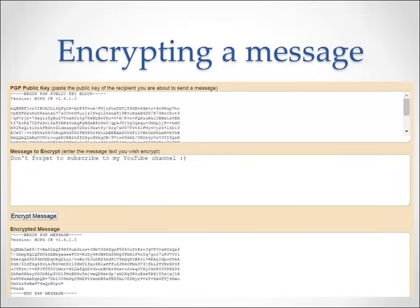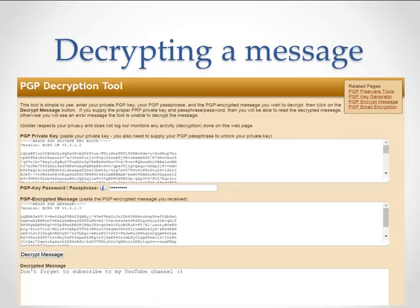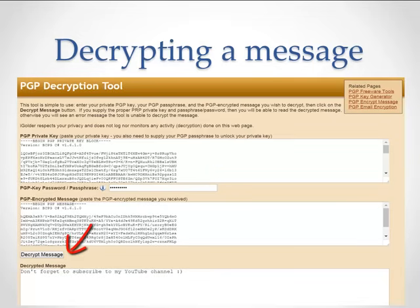Now that we have an encrypted message, we want to decrypt it. How do we decrypt a PGP message? That's easy. Go to the following website. Enter the private key that we saved earlier, the password, and the encrypted message. Click on the Decrypt Message button. And ta-da! The message we encrypted with the public key has been decrypted using the private key.